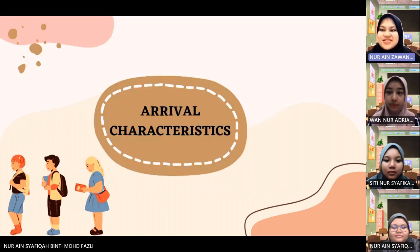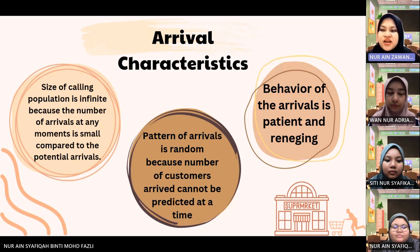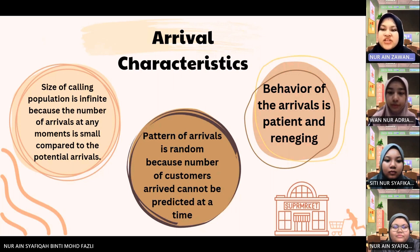Arrival characteristics of the queuing system include the size of the calling population, pattern of arrivals, and behavior of the arrivals. For the size of the calling population at Akon Jaya Supermarket Machang, it would be unlimited, which is infinite, because the number of arrivals at any moment is small compared to the potential arrivals.